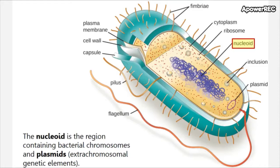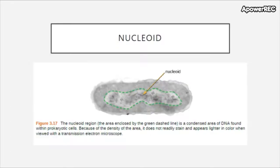Now let's discuss parts of the cell. We've already discussed briefly the nucleoid, which is the region containing the bacterial chromosomes. We also have plasmids, which are extra-chromosomal genetic elements — they are not part of the nucleoid and they are separate little pieces of genetic information. As we can see in this image, the nucleoid region is not contained within a membrane; it's a condensed area of DNA found within prokaryotes. This is difficult or impossible to see under light microscopy but can be viewed with a transmission electron microscope.